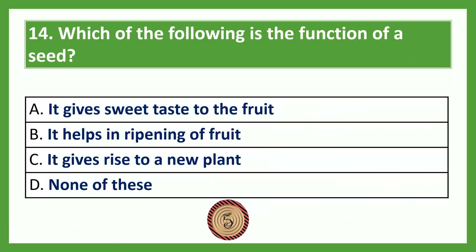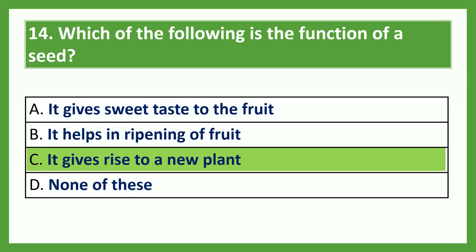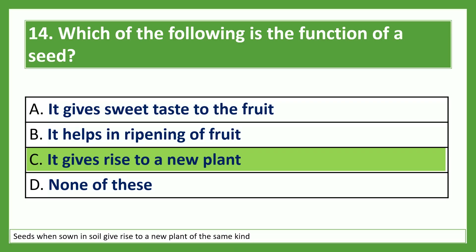Which of the following is the function of a seed? Option A: it gives sweet taste to the fruit; Option B: it helps in ripening of fruit; Option C: it gives rise to a new plant; Option D: none of these. The answer is Option C, it gives rise to a new plant. Seeds, when sown in soil, give rise to a new plant of the same kind.